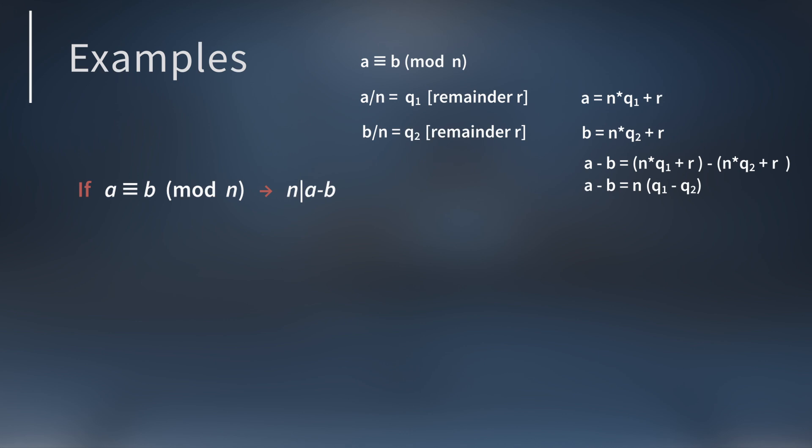However, it's also important to flip this statement and show the reverse is true. That is, if n divides a minus b, then a is congruent to b mod n.